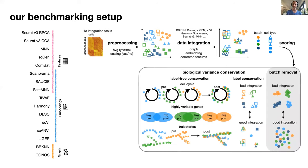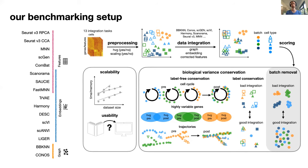These metrics range from batch removal metrics to metrics for label conservation, or methods that go beyond cell type labels, such as whether the cell cycle variance is conserved after integration, whether we find the same highly variable genes per batch, or whether trajectories are still conserved. We also look at scalability and the usability of these methods.